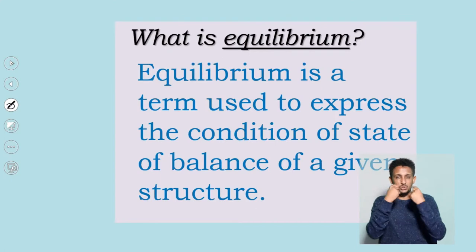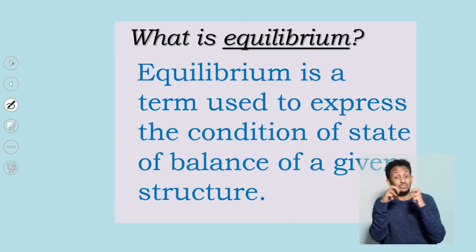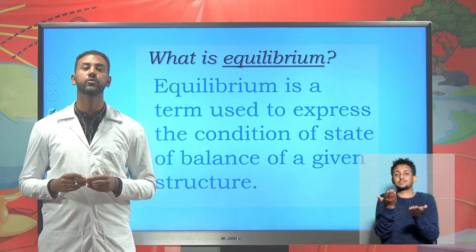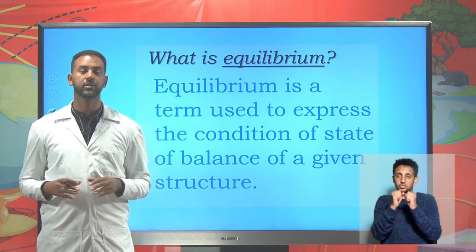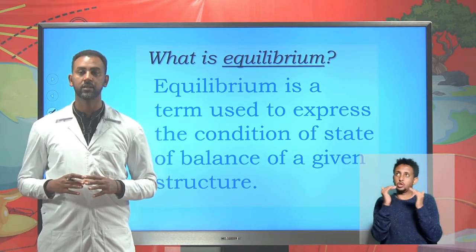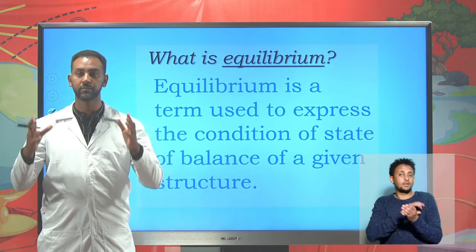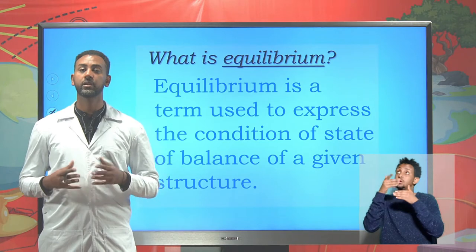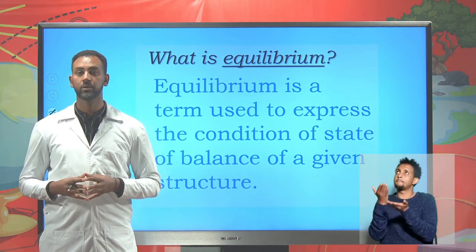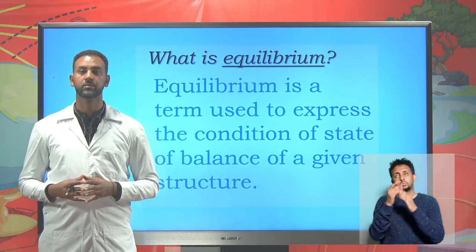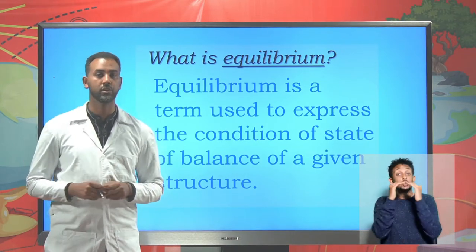Let's start with the definition. What do you mean by equilibrium? Equilibrium in physics can be considered as the term which expresses or tells us the state of balance of a given structure. It is the measure of the state of balance of a given structure. There might be a bridge, and that bridge should be in a state of balance — the net force exerted on that object should be balanced so that it has a proper function. If a building is not in a state of equilibrium or balance, it will collapse. Therefore, equilibrium is a measure of the state of balance.